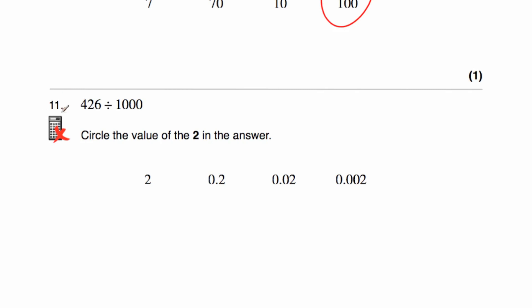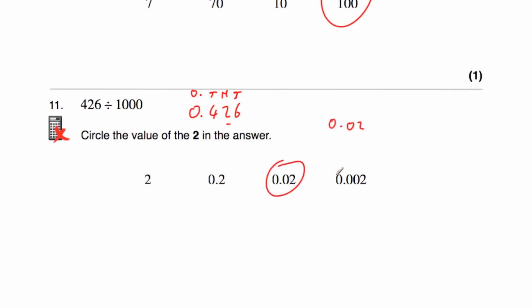Question number 11 has 428 divided by 1,000. We've been asked to circle the value of the digit 2 in that answer. Whenever we do 428 divided by 1,000, the answer would be 0.428, moving all the digits three columns to the right. We've been asked to circle the value of the digit 2. As you can see, the 2 is in our hundredths column, so we've got two hundredths, which would be 0.02. So the answer would be 0.02.